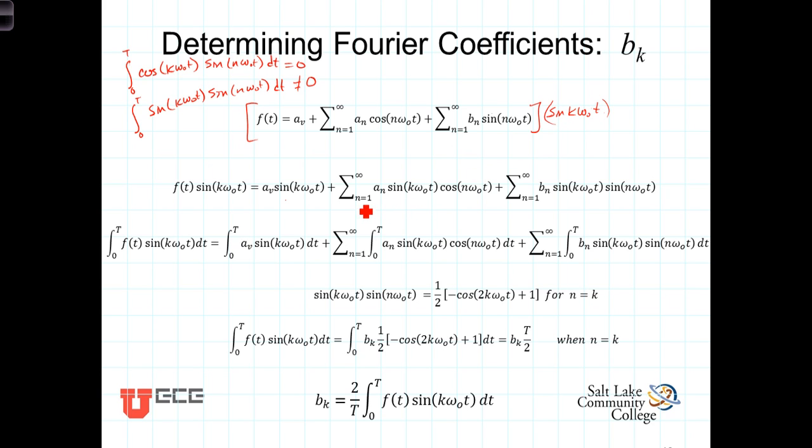We bring it inside the summation because, since it's a function of k not n, it's effectively a constant for any value of n in here. And, similarly, we bring this sine of k omega-0 t times the sine of n omega-0 t. We've multiplied both sides by that.